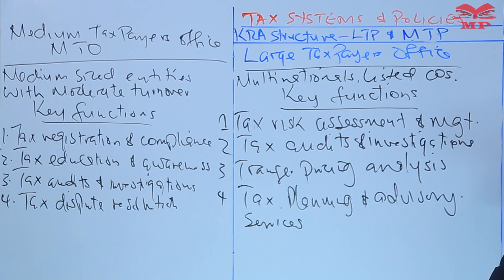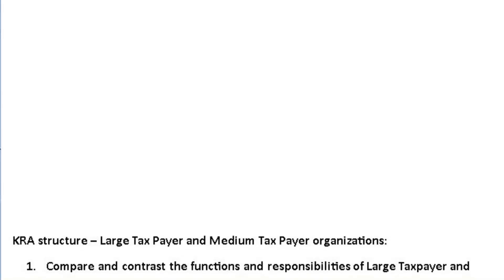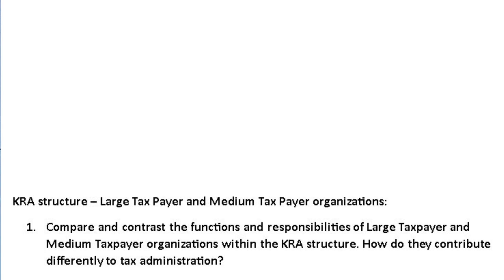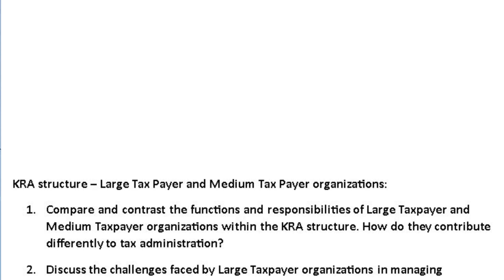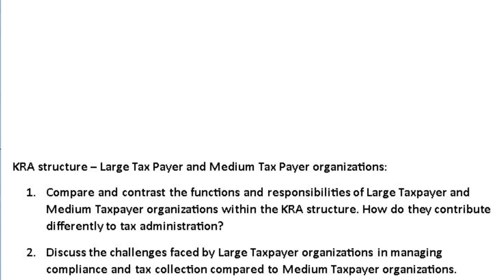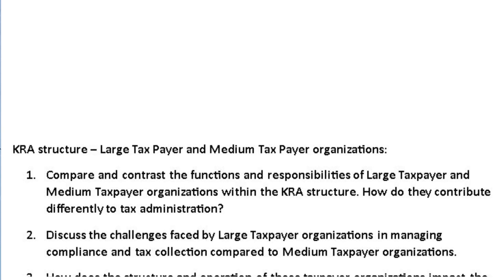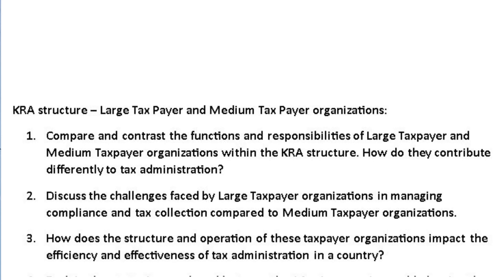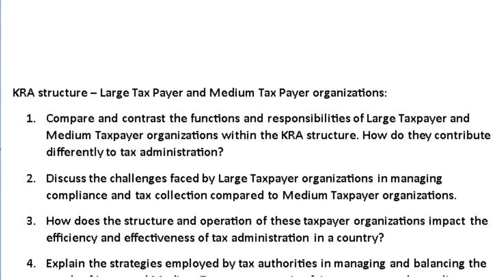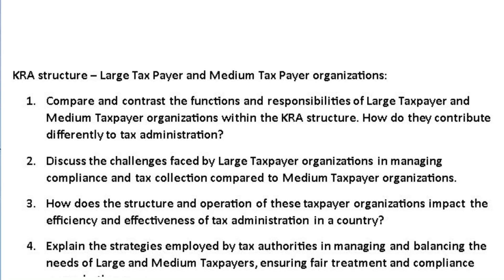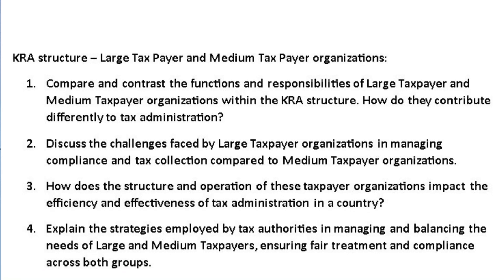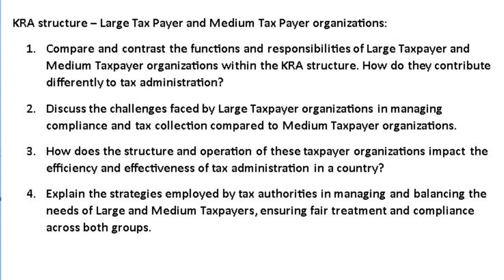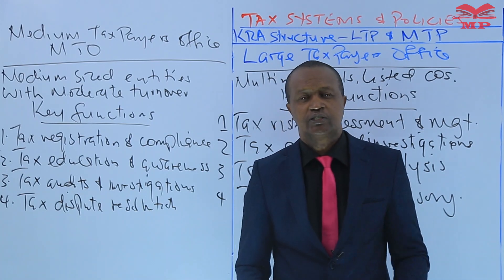With that, we come to the end of this lesson. Here are today's revision questions. Number one: compare and contrast the functions and responsibilities of Large Taxpayer and Medium Taxpayer organizations within the KRA structure — how do they contribute differently to tax administration? Number two: discuss the challenges faced by large taxpayer organizations in managing compliance and tax collection compared to medium taxpayer organizations. Number three: how does the structure and operation of these taxpayer organizations impact the efficiency and effectiveness of tax administration in Kenya? Number four: explain the strategies employed by tax authorities in managing and balancing the needs of large and medium taxpayers, ensuring fair treatment and compliance across both groups. Ensure you attempt the questions. I hope to meet you in our next session. Bye-bye.